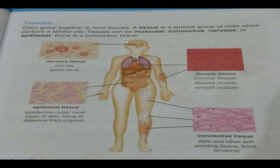Bone is a connective tissue. Nervous tissue is related to nerves and the spinal cord. Muscle tissues include cardiac muscles, skeletal muscles, and smooth muscles. Epithelial tissues are related to the epidermis.